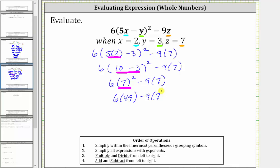The next step is to multiply and divide from left to right, which means in our case, we determine 6 times 49, and 9 times 7. 6 times 49 equals 294, and 9 times 7 equals 63.